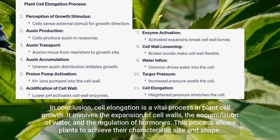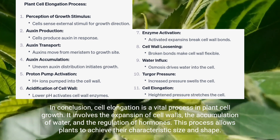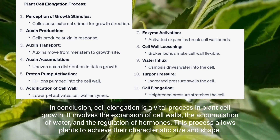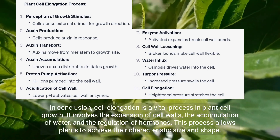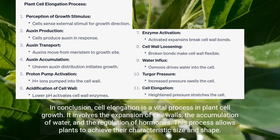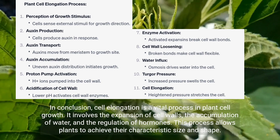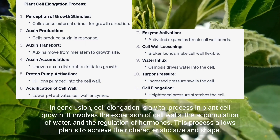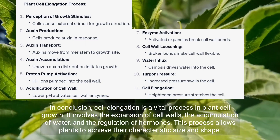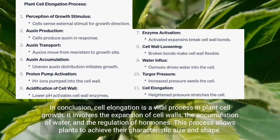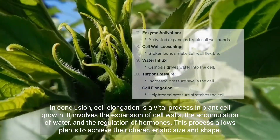In conclusion, cell elongation is a vital process in plant cell growth. It involves the expansion of cell walls, the accumulation of water, and the regulation of hormones. This process allows plants to achieve their characteristic size and shape.